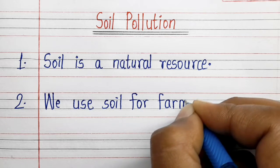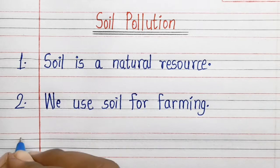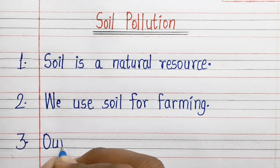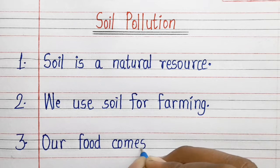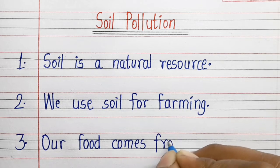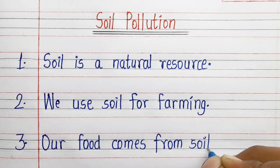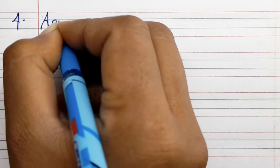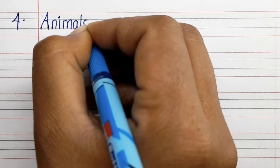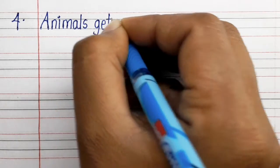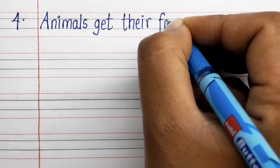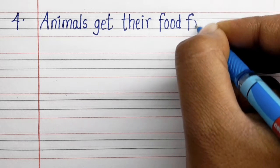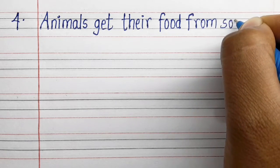Second line: we use soil for farming. Third line: our food comes from soil. Fourth line: animals get their food from soil.